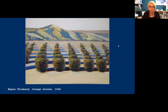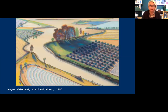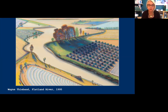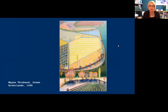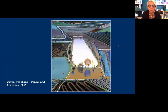Flatland River from 1995 uses a similar mixture of competing perspectives, changes in scale, and unnatural heightened color to create its effect. Notice the plowed field in the lower left — the paint's applied with a knife, just like on the cakes. The same effect, more pronounced, is in Green Riverlands from 1998 and Ponds and Streams from 2001.